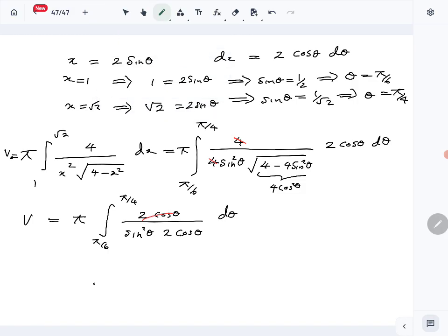Then what we have is π integral from π over 6 to π over 4 of 1 over sine squared, which is cosecant squared theta d theta. The integral of cosecant squared theta is minus cotangent theta. Now apply the limits and get the answer.